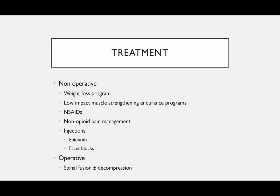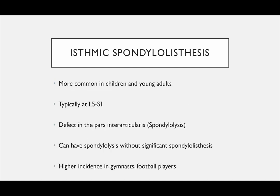Treatment for degenerative spondylolisthesis includes non-operative options: weight loss, low-impact muscle strengthening, endurance programs, and NSAIDs. Try to stay away from opioids if possible. Injections can help. In some cases, you may have to do a spinal fusion and decompression.